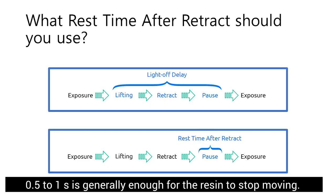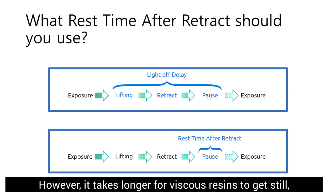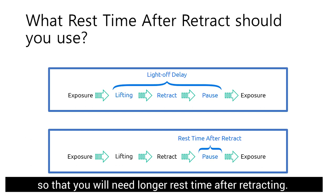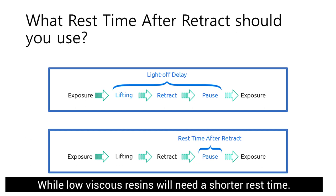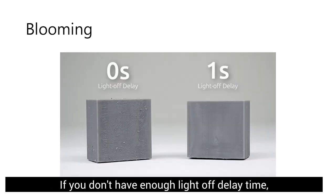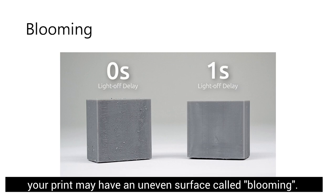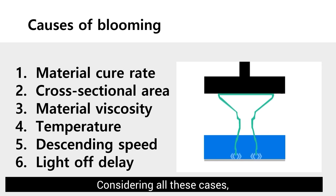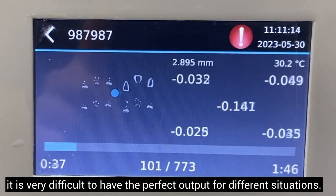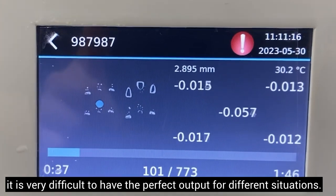Generally, 0.5 to 1 second is enough for the resin to stop moving. However, viscous resin takes longer to settle, so it will need a longer rest time after each layer. Low-viscosity resin will need a shorter rest time. If you don't have enough light delay time, your print may have an uneven surface called blooming. Considering all these cases, it is very difficult to achieve the perfect output for different situations.